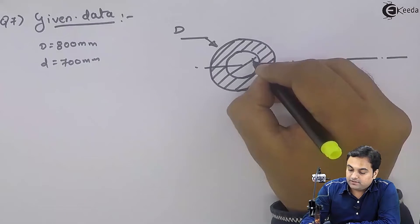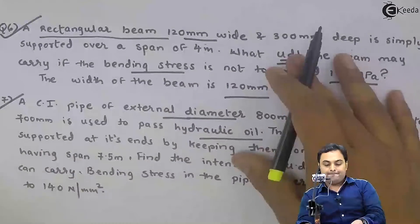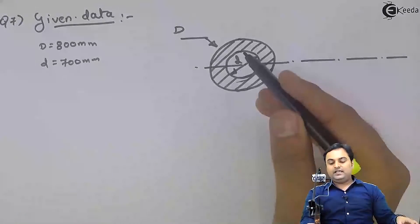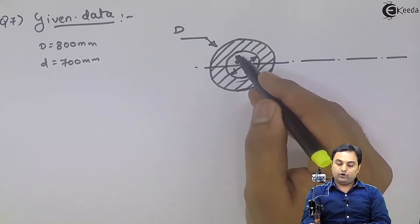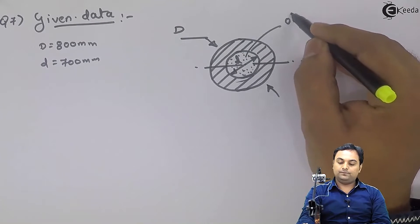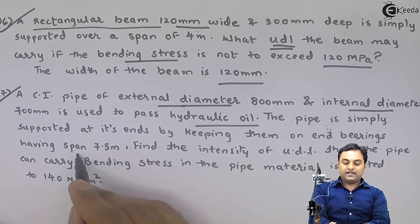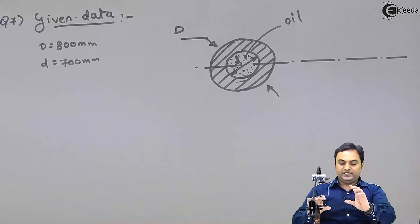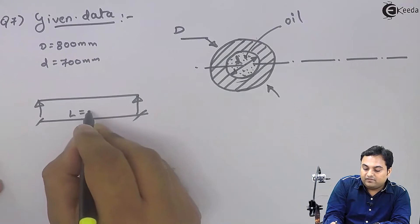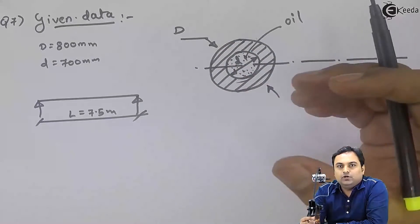The pipe is used to pass hydraulic oil, meaning oil is flowing inside this pipe. Now the pipe is simply supported at its ends on bearings with a span of 7.5 meters — we treat it like a simply supported beam with length 7.5 meters. The oil inside has weight that acts on the pipe.